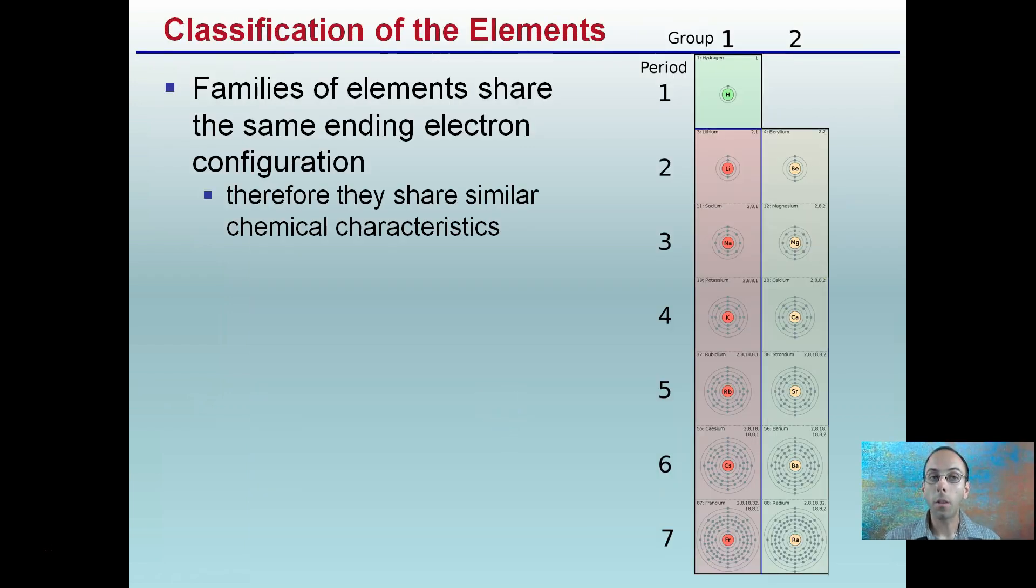Classification of the elements. Families of elements share the same ending electron configuration. We're looking at group one and group two. If we were to count all the electrons in the outer most shell here, we'd find that there's only one. Outer most shell here, there's one. Outer most shell, there's one. Even all the way down here at francium, the outer most shell, there's only that one electron. In group two, we'll notice that there's two electrons in each one of these outer shells. As a result, they share similar chemical characteristics. This is why all the elements in group one have similar chemical characteristics. All that same one outside or valence electron, that outside electron is what's going to do the vast majority of the reaction, because that's on the outermost area. The electrons in the middle here get stuffed in. It's the ones on the outside doing the reaction. Group one has one outer one. Group two has two.